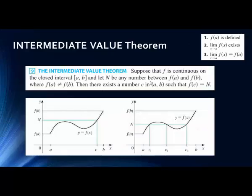Here's another theorem — the Intermediate Value Theorem — which has a messy definition but a simple concept. Suppose F is continuous on the closed interval [A, B]. It's closed — using brackets — meaning A and B are included points. Let N be any number between F(A) and F(B), where these are y-values and F(A) does not equal F(B).